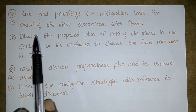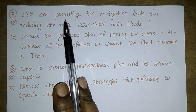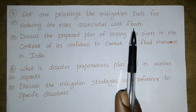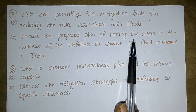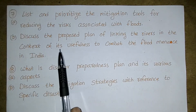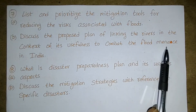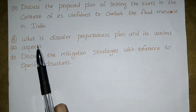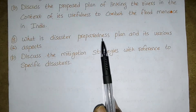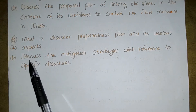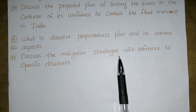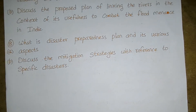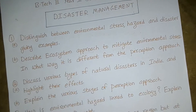Seventh question (a): List and prioritize the mitigation tools for reducing the risk associated with floods. Seventh question (b): Discuss the proposed plan of linking the rivers in the context of its usefulness to combat floods in India. Eighth question (a): What is a disaster preparedness plan and its various aspects? Eighth question (b): Discuss the mitigation strategies with reference to specific disasters.